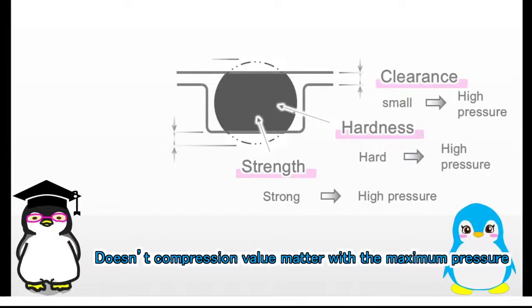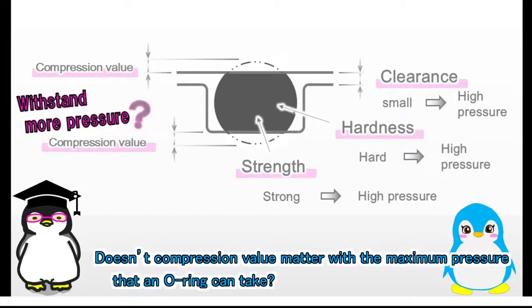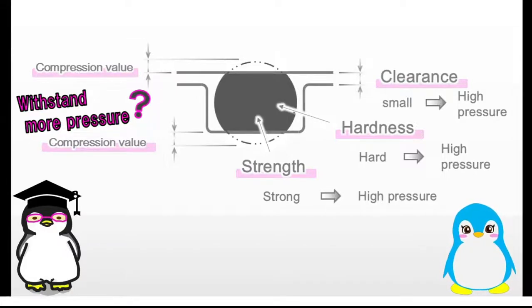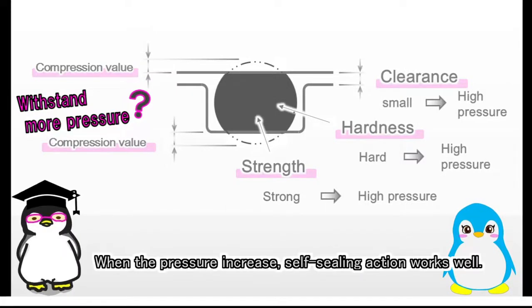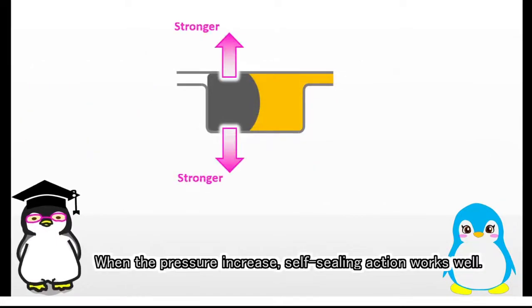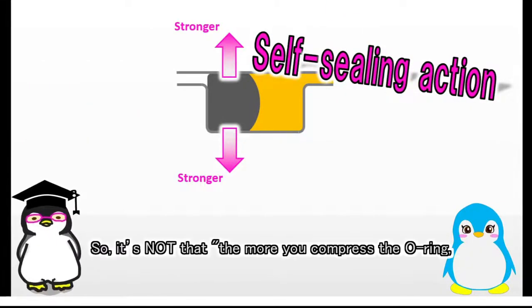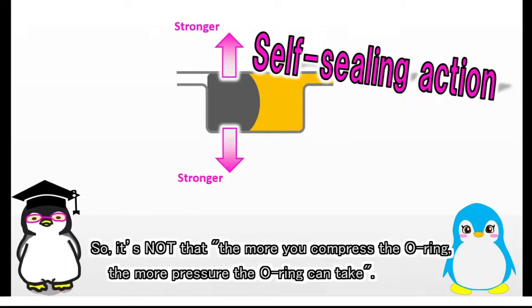Doesn't compression value matter with the maximum pressure that an O-ring can take? I feel like the O-ring can take more pressure if I compress the O-ring more. When the pressure increases, self-sealing action works well. So it's not that the more you compress the O-ring, the more pressure the O-ring can take.